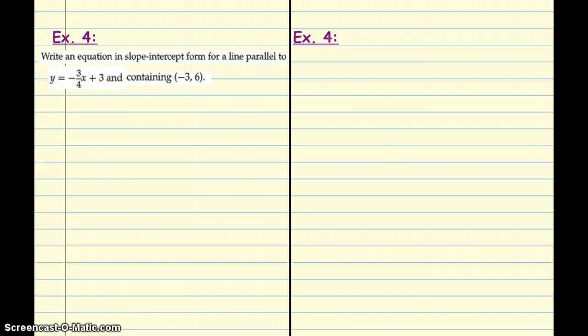All right. So, now we go on to the last equation. It says, write an equation in slope-intercept form for a line parallel to y equals negative 3 fourths x plus 3. Again, if we know that the line is parallel, then we know our slope for this example is going to be negative 3 fourths. So, what we're going to do is use this point that's given to us, and we have to find b, our y-intercept.